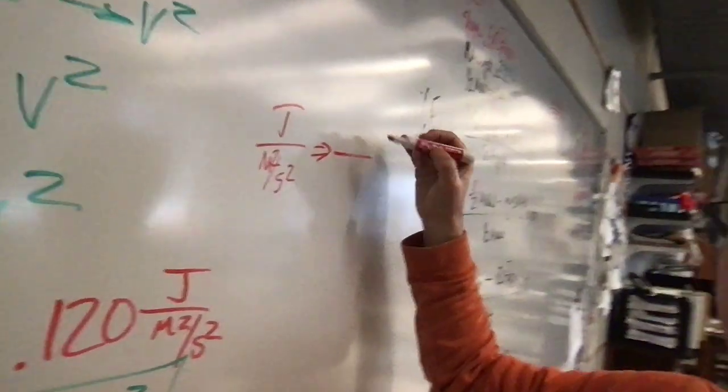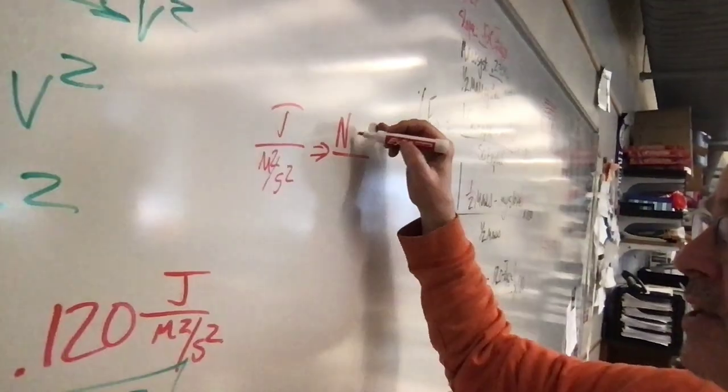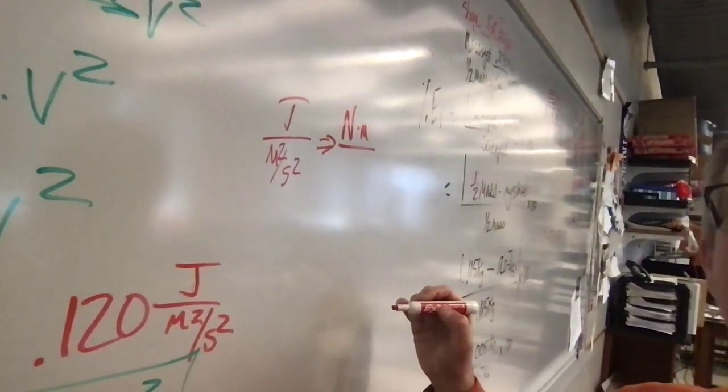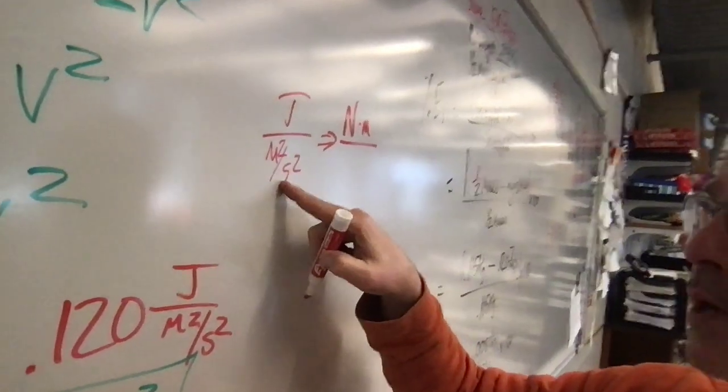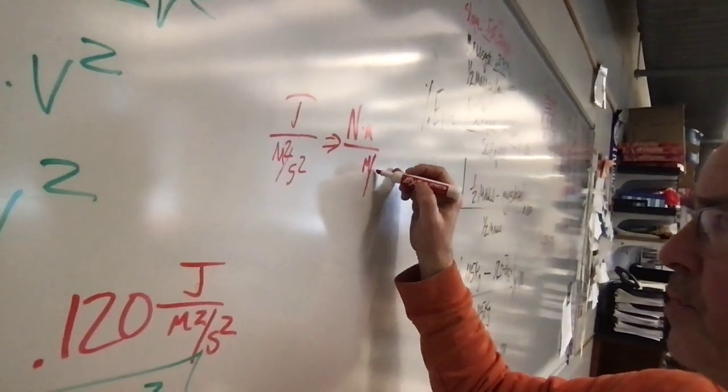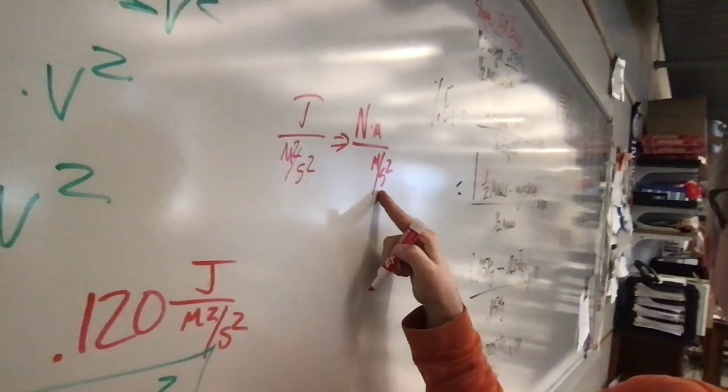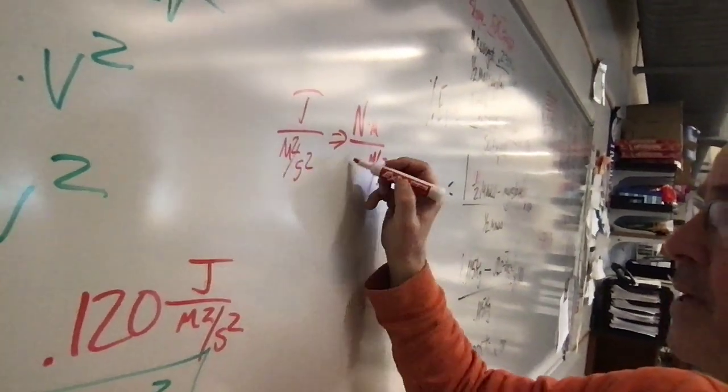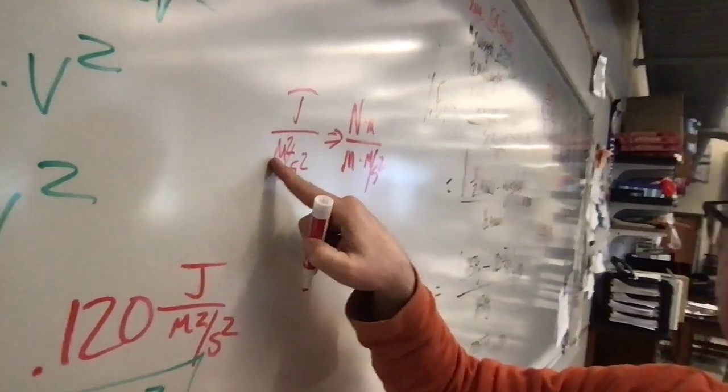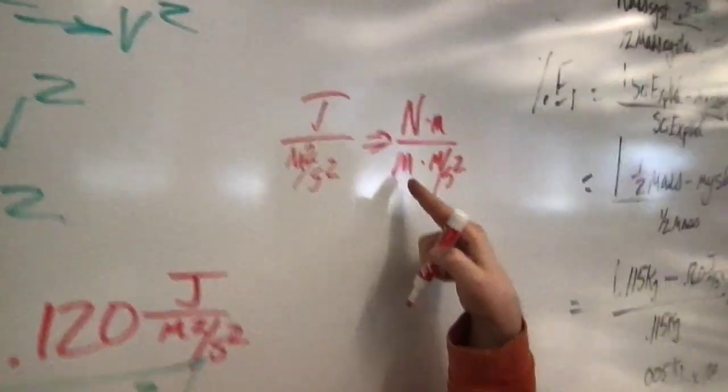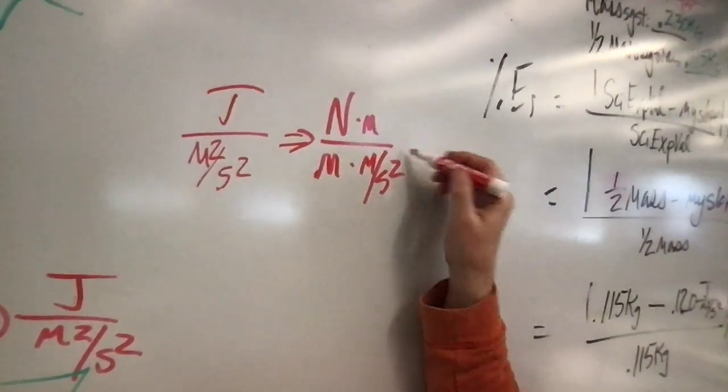Last week we found out joules is a measurement of energy and that it can be rewritten as a Newton times a meter and we have meters squared per second squared. A bunch of kids wrote meters per second squared yesterday by accident but if we pulled just one meter off over here we could say that a meter squared per second squared is a meter times a meter per second squared.